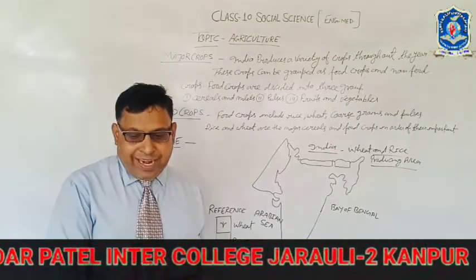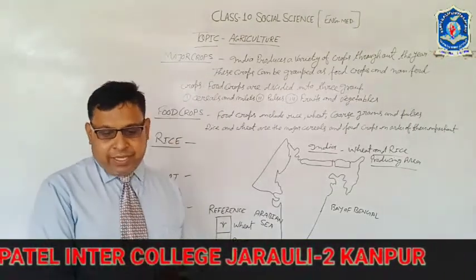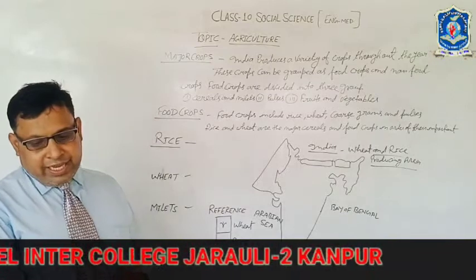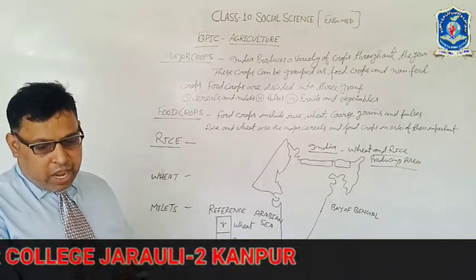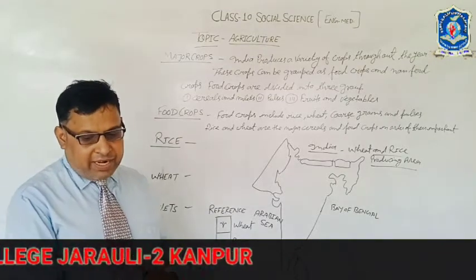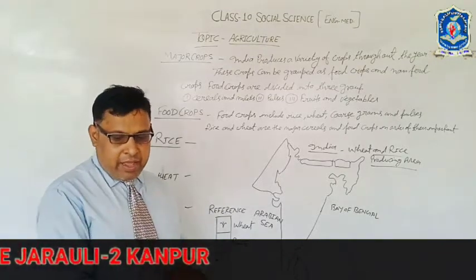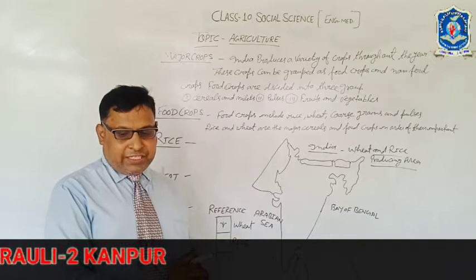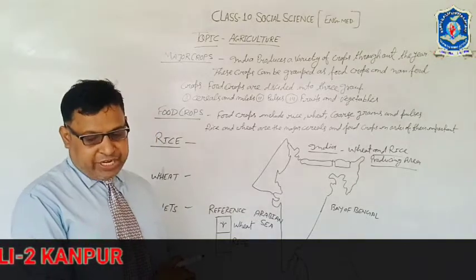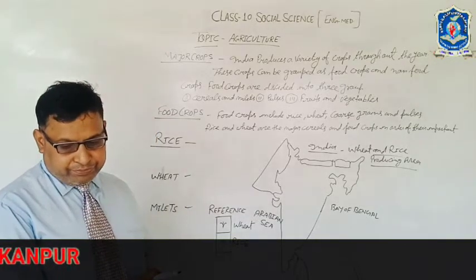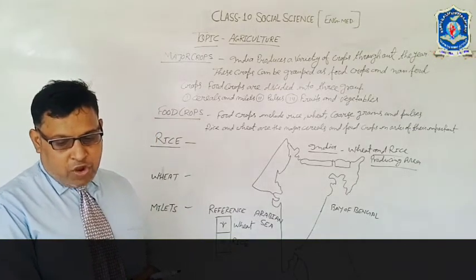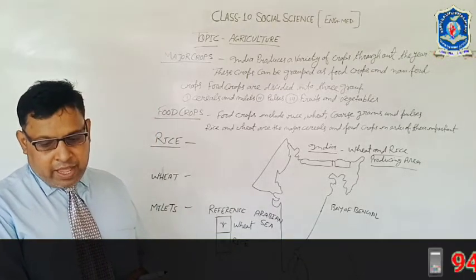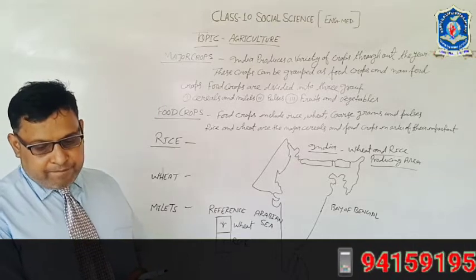Rice is grown first in nurseries and later transplanted in flooded fields. It is a labor-intensive crop. Punjab and Haryana are rice surplus states where rice is grown as an irrigated crop.